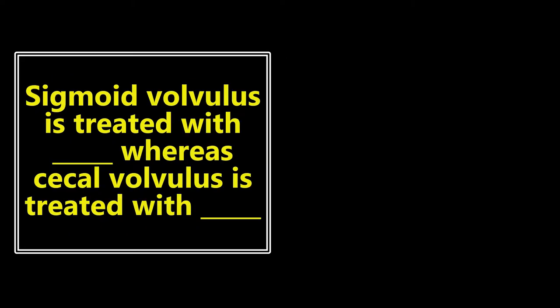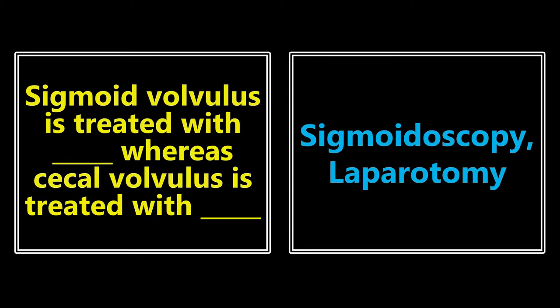Sigmoid volvulus is treated with what, whereas cecal volvulus is treated with what? They have two different ways that they need to be managed. Sigmoid volvulus is treated by sigmoidoscopy, whereas cecal volvulus is treated by laparotomy. Cecal volvulus can be a little bit harder to access — it's more upstream in the colon — so to treat that, you need to do a laparotomy.